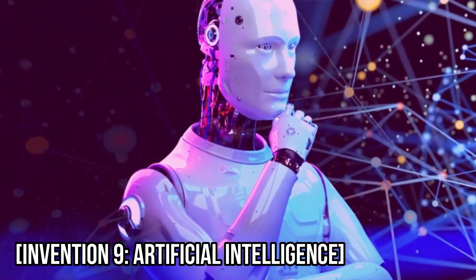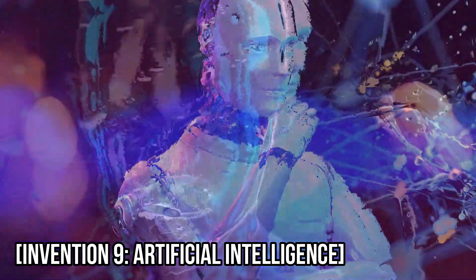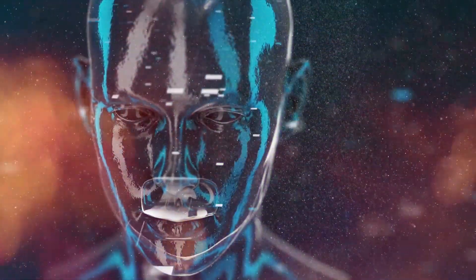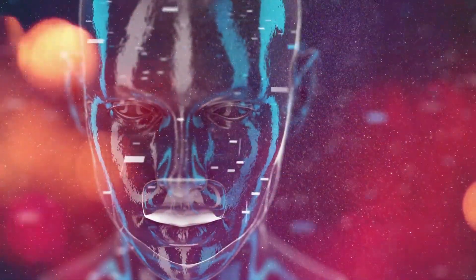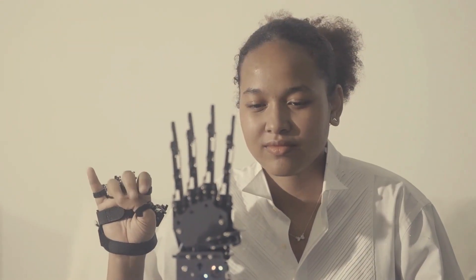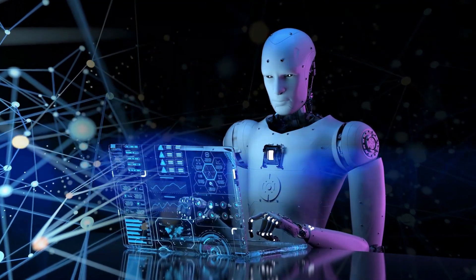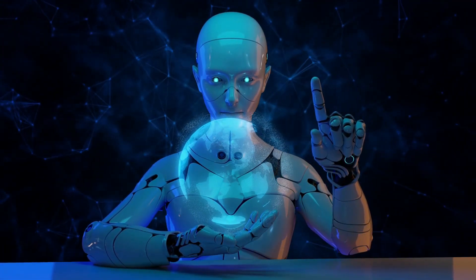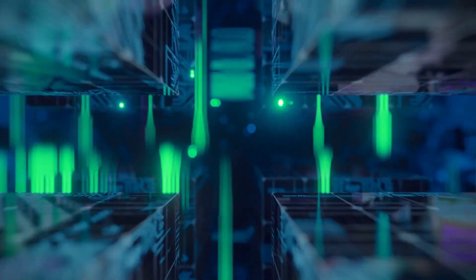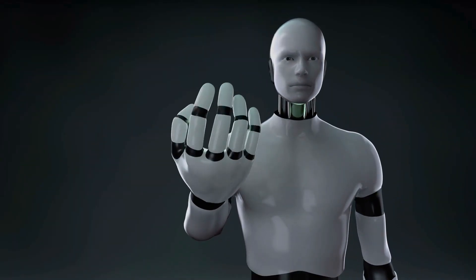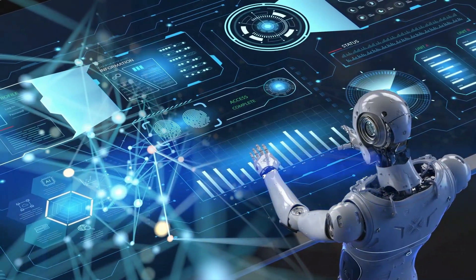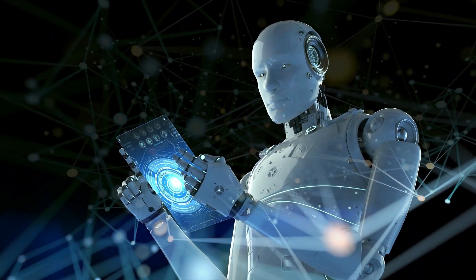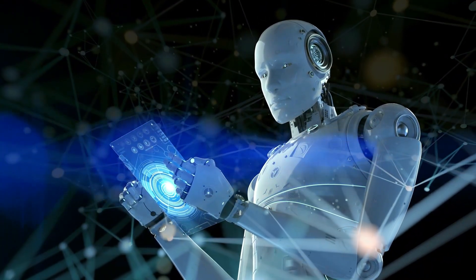Invention 9: Artificial Intelligence. Artificial intelligence is a type of intelligence demonstrated by machines, rather than humans. It has the potential to revolutionize the way we work and live, with applications in healthcare, finance, and even transportation. With artificial intelligence, machines can analyze vast amounts of data and make decisions faster and more accurately than humans.